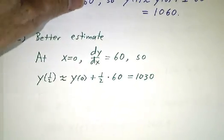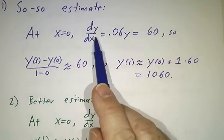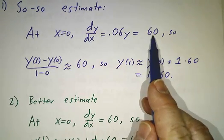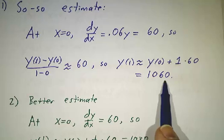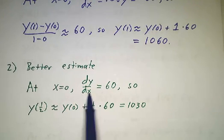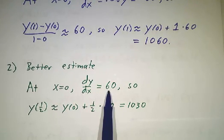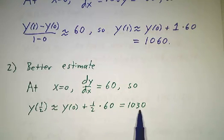A better estimate is to use a smaller step and say, you know what? Sure, dy/dx was 60 when we started, but by the time we were up to 1060, it had changed some. So maybe we better stop and readjust halfway through. So let's only use the fact that it's increasing at rate 60 for half a turn. Use that to estimate where we are after half a step.